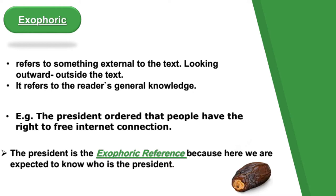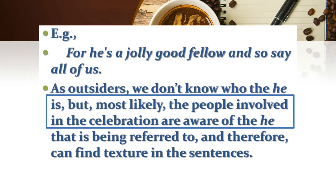Exophoric refers to something external to the text — it refers to the reader's general knowledge. For example, the sentence: 'The president ordered that people have the right to free internet connection.' Here, 'the president' is the exophoric reference, because we are expected to know who the president is — in this context, it is President Duterte. Another example: 'For he is a truly good fellow, and so say all of us.' As outsiders, we don't know who 'he' is, but the people involved in the celebration are aware of who is being referred to, and therefore can find texture in the sentence.